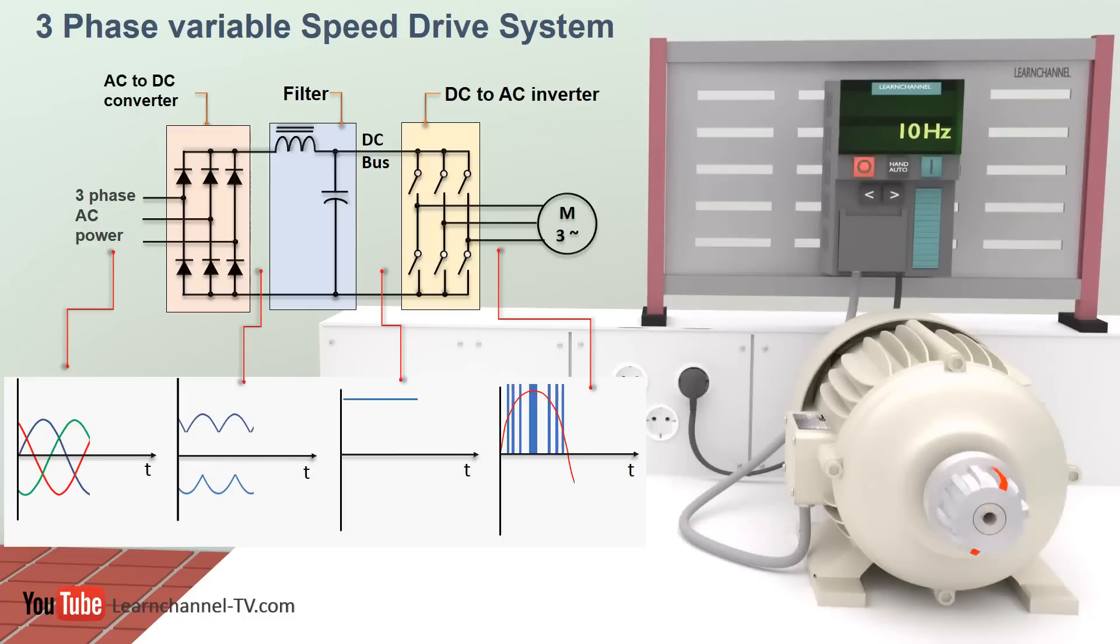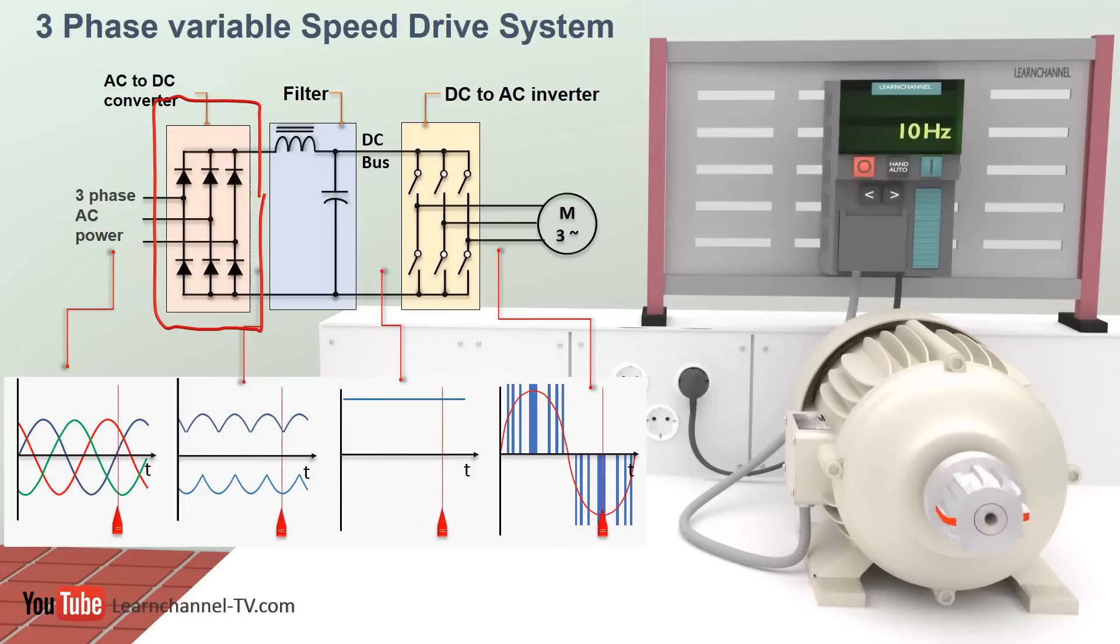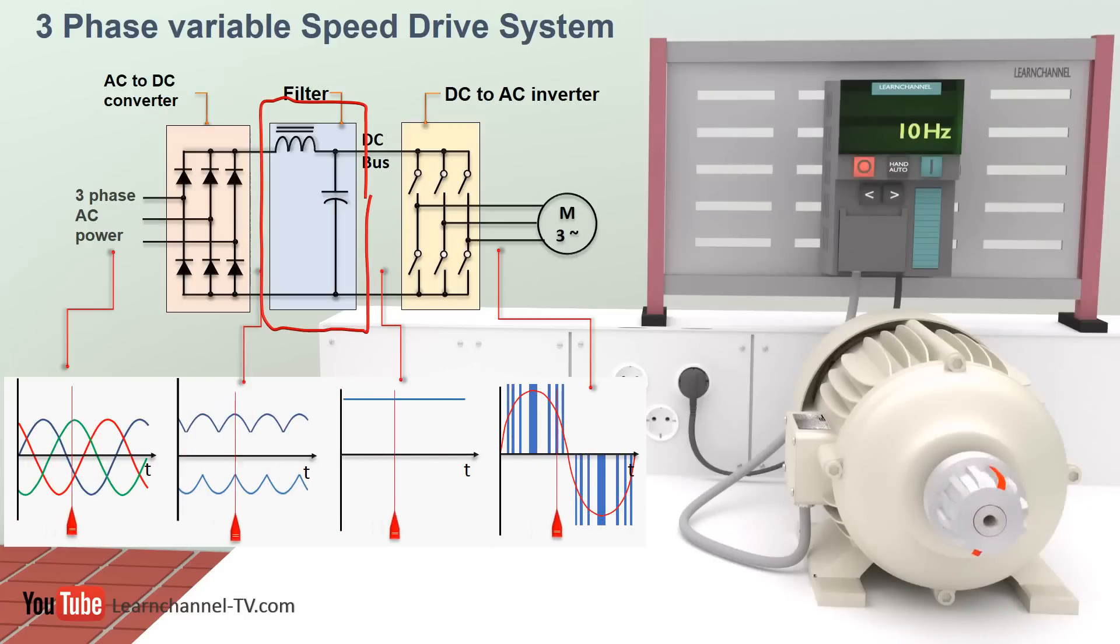This block diagram illustrates a typical three-phase AC variable speed drive system with its main components. First, the incoming AC voltage enters a bridge rectifier which consists here of six diodes. In this stage, the DC voltage has ripples.